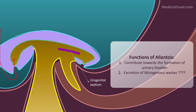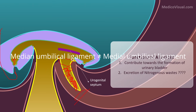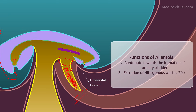Finally, the fate of allantois: as the baby is born, the urachus is no longer needed. Its lumen is obliterated and it becomes a solid fibrous cord connecting the urinary bladder to the umbilicus, or navel. In newborns and adults this is no longer called the urachus — it is now called the median umbilical ligament. Remember: this is the median umbilical ligament, not the medial umbilical ligament — these are two separate structures.